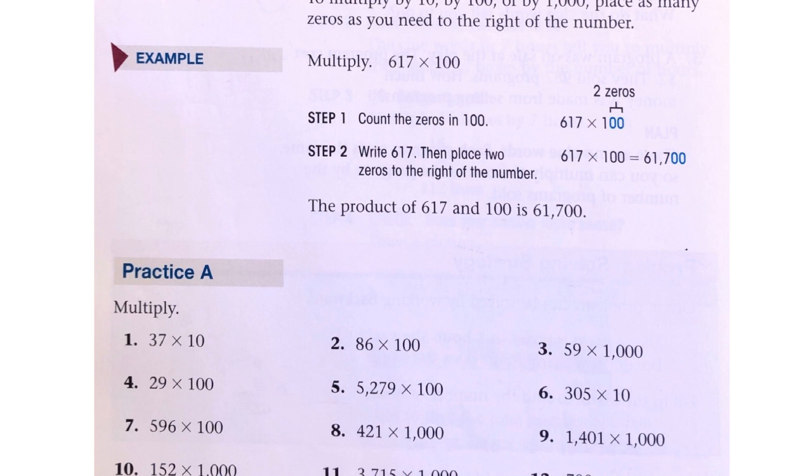Step two, write 617, then place two zeros to the right of the number. So here's 617 and two more zeros. The product of 617 and 100 is 61,700.